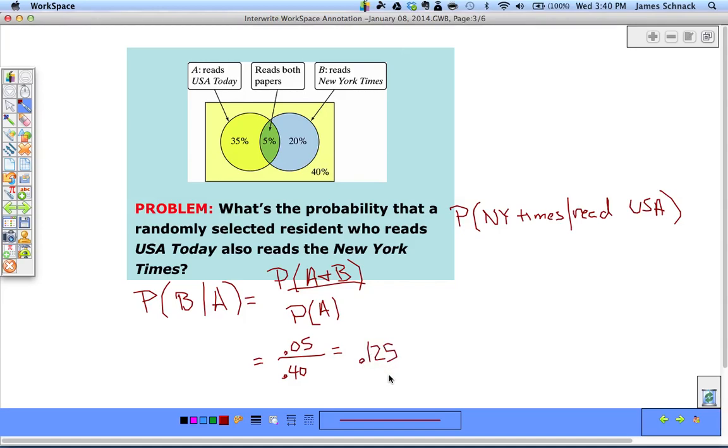This is telling us that we know they read USA Today, and that means this stuff is now irrelevant. Our problem has been shrunk down to this simplified sample space from what it was before.